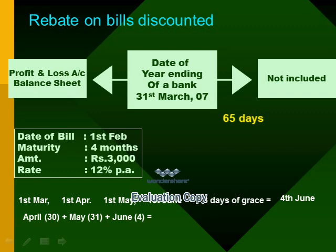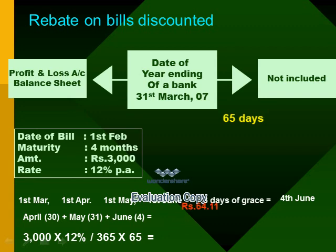So the amount of discount for 65 days cannot be treated as the income of the bank. Now let us calculate the amount of interest. Value of the bill Rs.3000 multiplied by 12% gives interest for 12 months; divided by 365 gives interest per day; multiplied by 65 gives interest for 65 days. That amount comes to Rs.64.11. So Rs.64.11 will not be treated as the income of the bank for the current year.